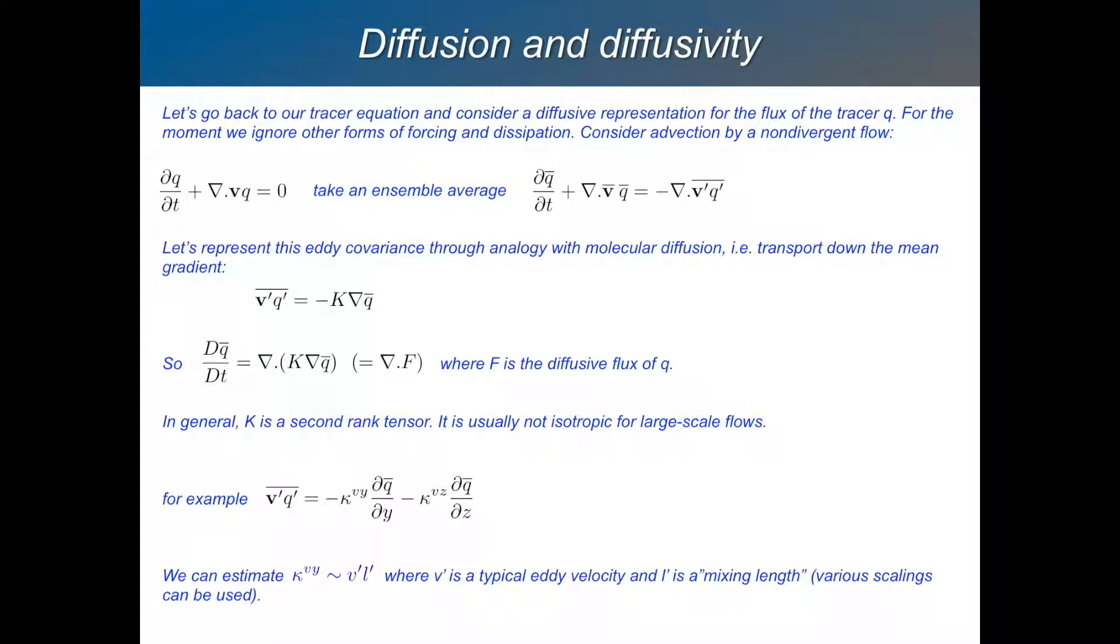And we say that our geostrophic eddies are like these molecules. They will, if there's a gradient in some larger scale field, then the geostrophic eddies will try to smooth out that gradient by diffusion. And so we can say that this, so we have this development equation.